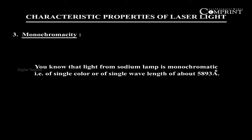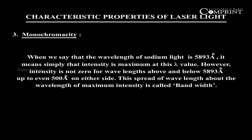Monochromacity. You know that light from a sodium lamp is monochromatic, that is, of a single color or single wavelength of about 5893 Angstroms. When we say that the wavelength lambda of sodium light is 5893 Angstroms, it means simply that intensity is maximum at this lambda value. However, intensity is not zero for wavelengths above and below 5893 Angstroms, up to even 500 Angstroms on either side. This spread of wavelength above the wavelength of maximum intensity is called bandwidth.